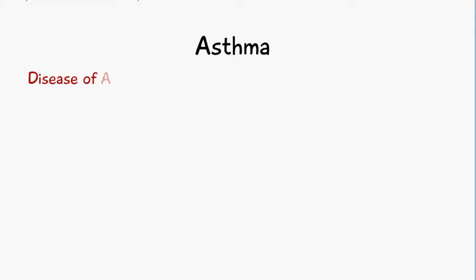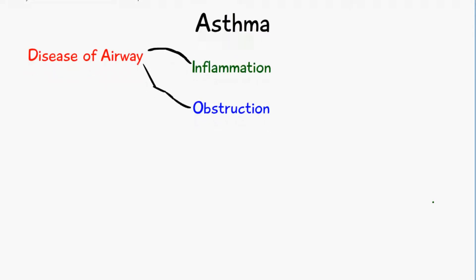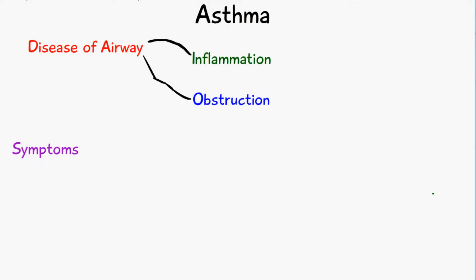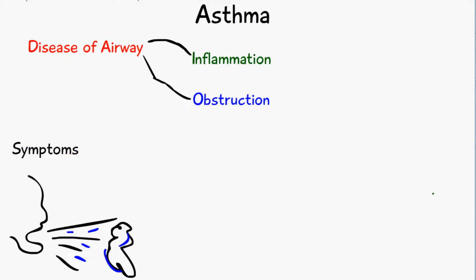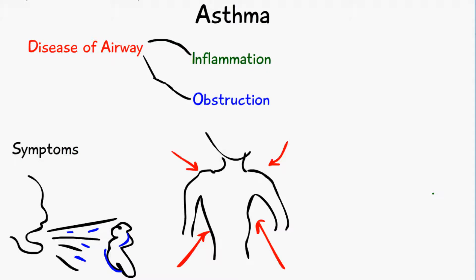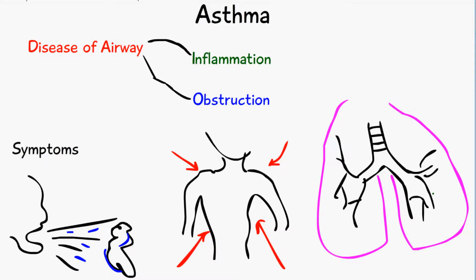Asthma is a disease of the airway which involves inflammation and airway obstruction. The main symptoms include coughing, chest tightness, bronchial hyperreactivity, and other symptoms such as wheezing and shortness of breath.